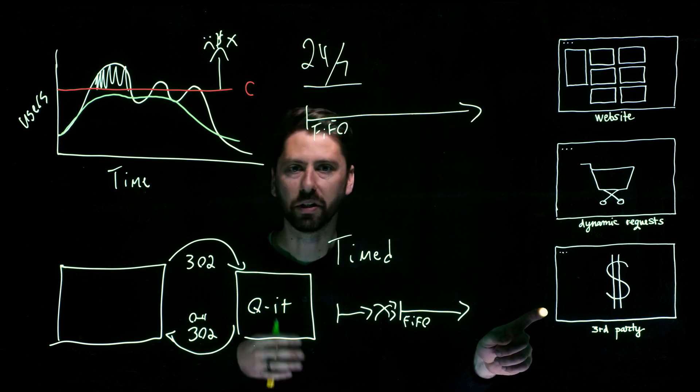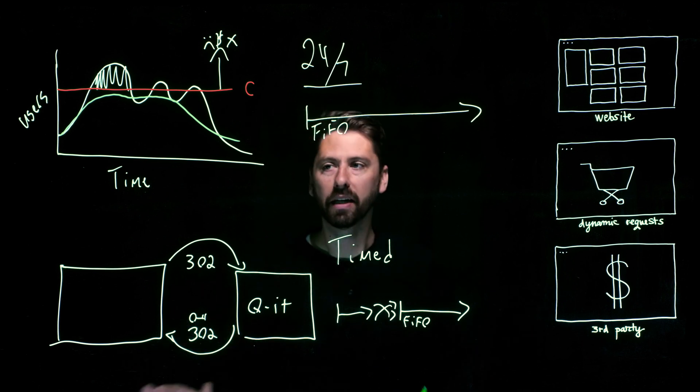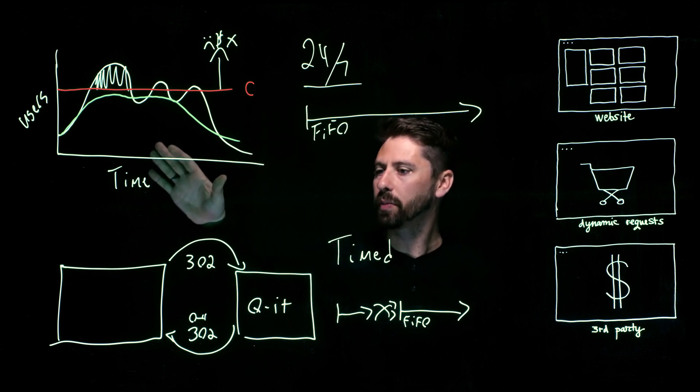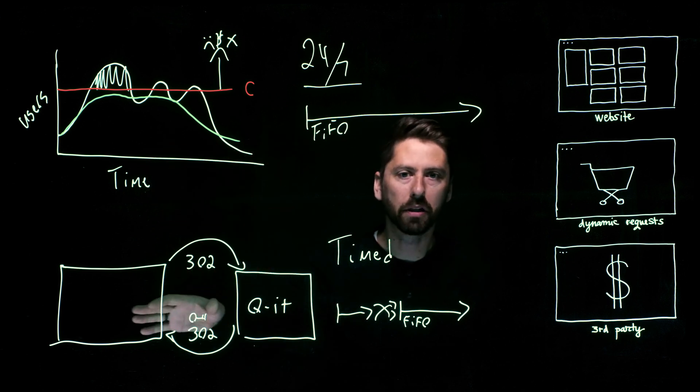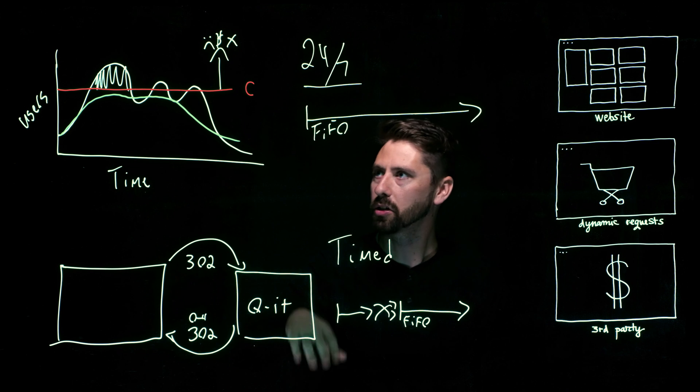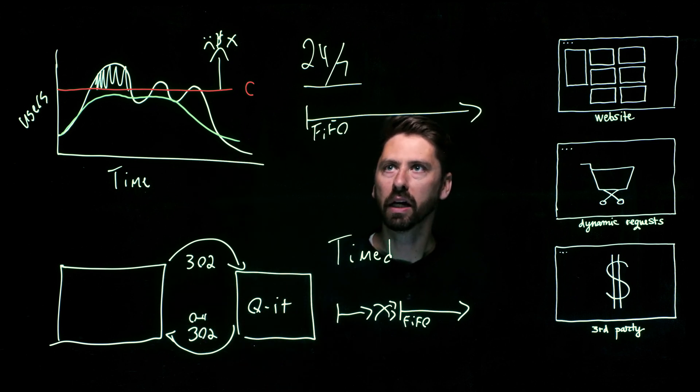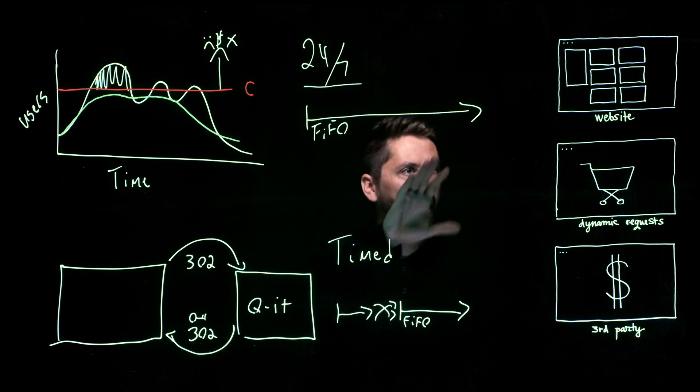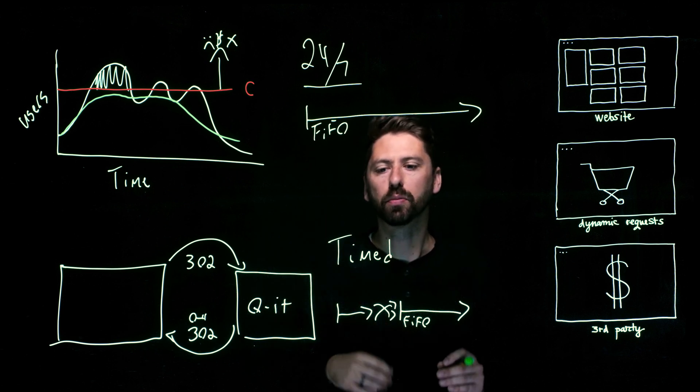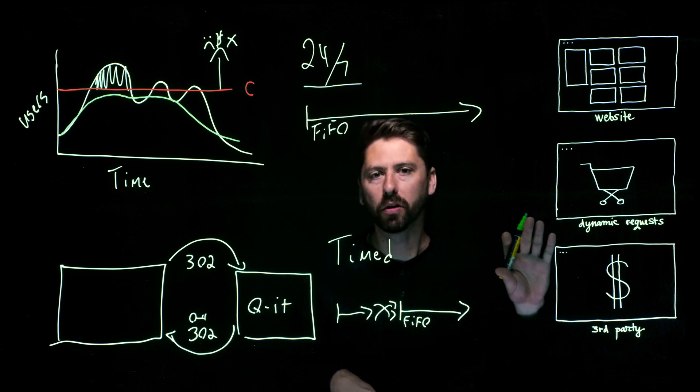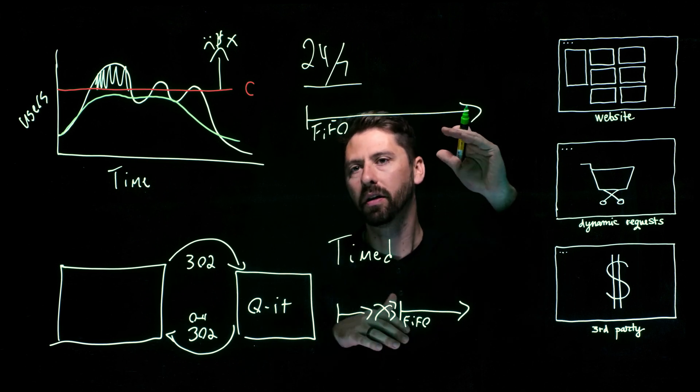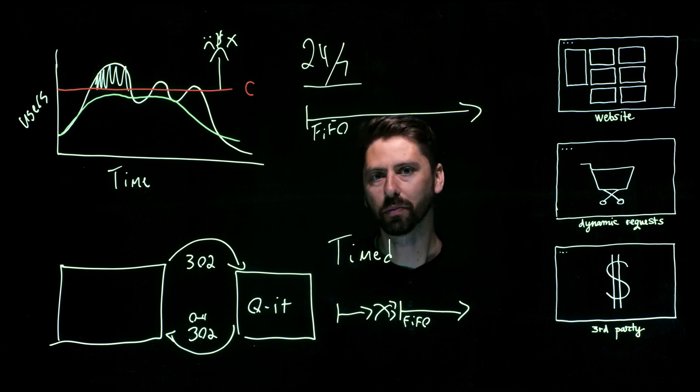In summary, QWIT solves this capacity problem by using a 302 redirect to move people onto QWIT's infrastructure and protect your site, then move people back in a first-in, first-out order. We have different configurations and actions and triggers that allow you to protect specifically what you want as well as use the configuration that fits best with your business case.